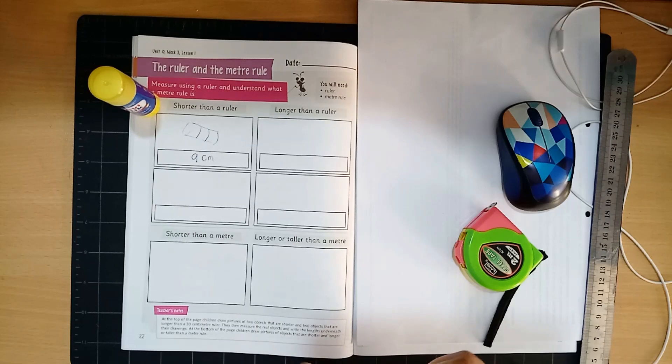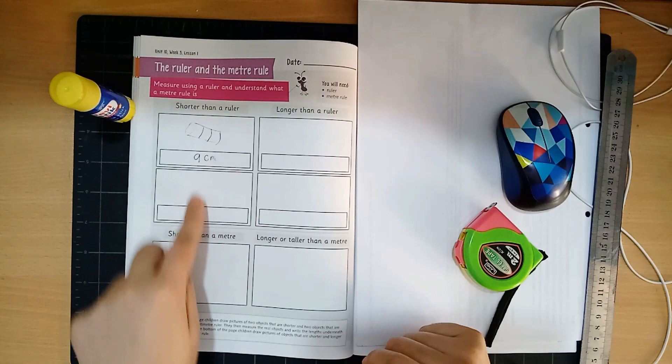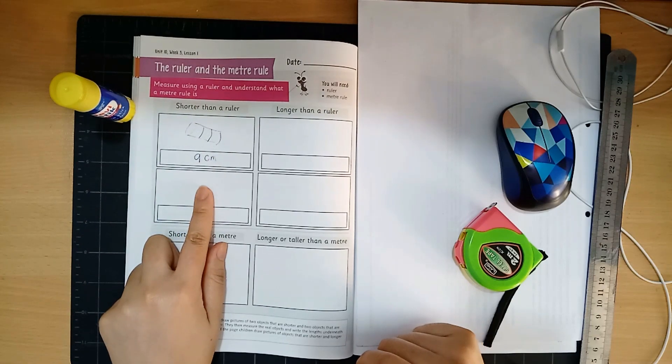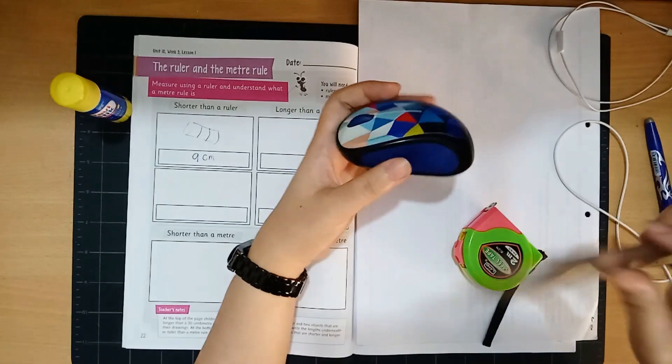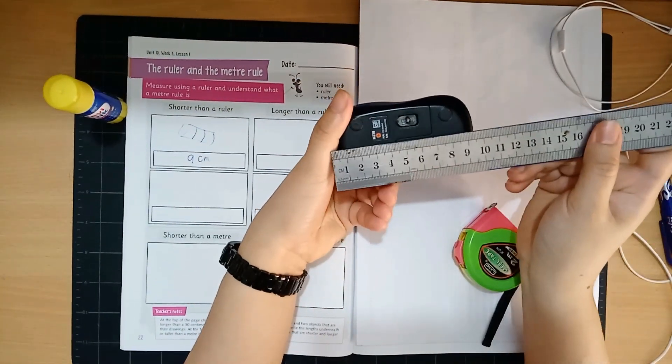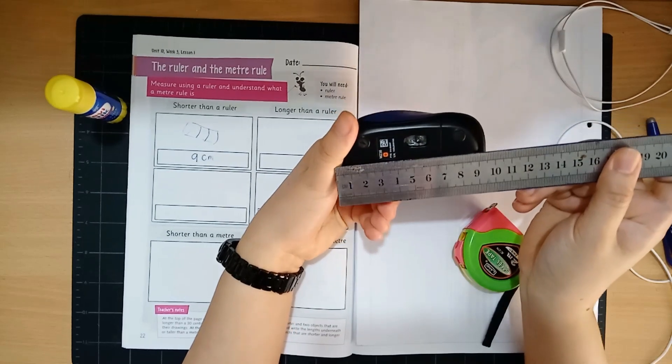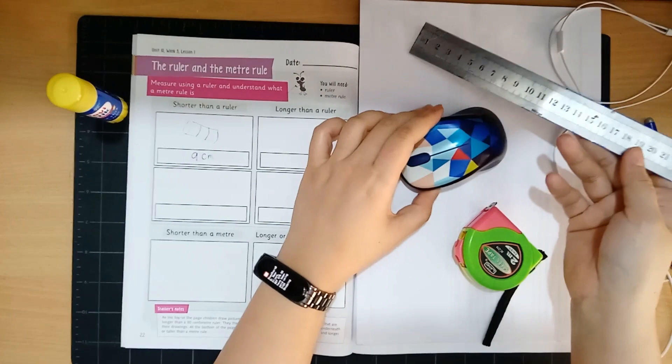Okay now this is a thing that is shorter than a ruler and another thing you have to look for something that is shorter than a ruler. I have 10 centimeters. 10 centimeters. Wow this is 10 centimeters.